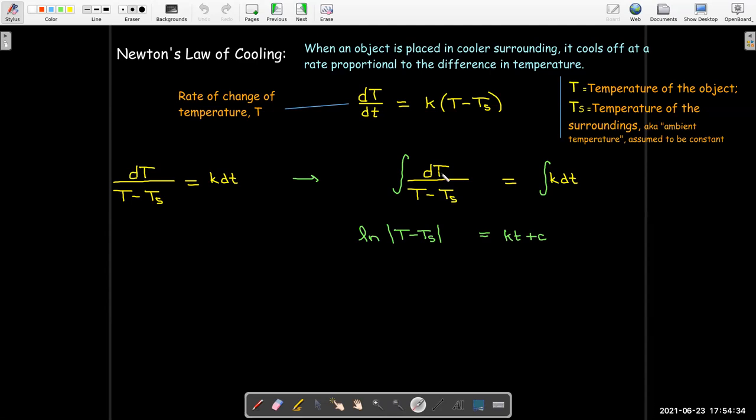And so the antiderivative of dT over T minus T_s would be the natural log of the absolute value of T minus T_s. And then the antiderivative of k would be kt plus some constant c. And remember, what we did before, we'll do the same thing here. I should get two constants, but I'll just subtract one from each side and then combine it into a single constant.